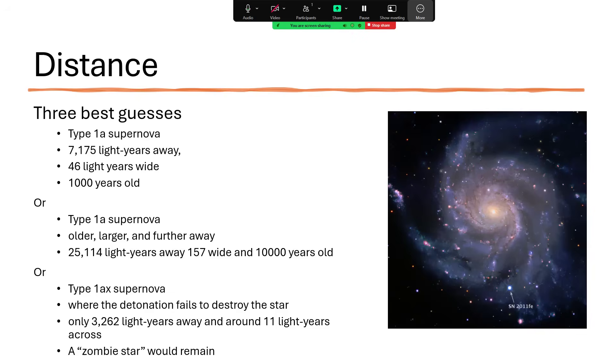But the third competing theory is that it's a slightly different explosion of a white dwarf called a Type 1ax supernova. And this is where the detonation fails to completely destroy the star. And these are rather rare, and we're beginning to understand them now. They are fainter than the other two types of Type 1a supernova because they don't consume all of the core of the star in a burst of runaway destruction. And so lower power means that for the same apparent brightness, you would have to be nearer. And so this is saying that we're 11 light years in diameter and 3,200 light years across. So three rather different estimates. And the interesting thing about Type 1a supernova is the nature of the star that survives this explosion, and we call those zombie stars.